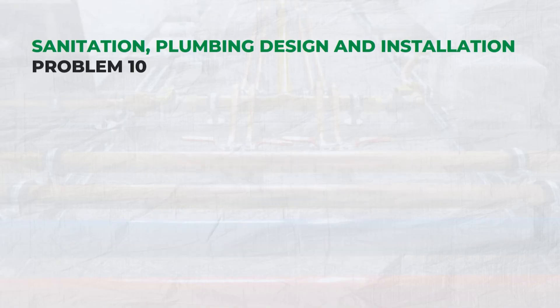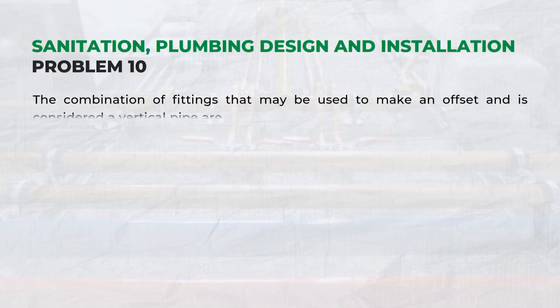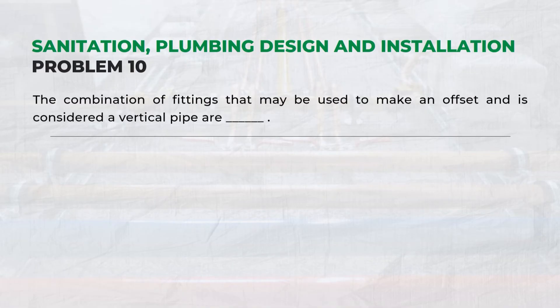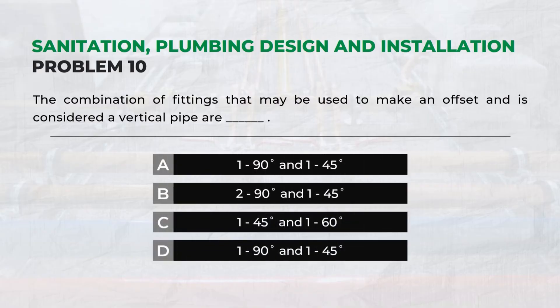The combination of fittings that may be used to make an offset and is considered a vertical pipe are D: 190 degrees and 145 degrees.